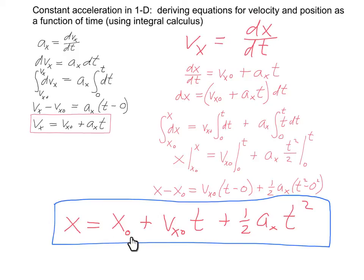The time derivative of x sub 0 is 0. The derivative with respect to time of v sub x0 times t is just this constant, v sub x0. We see that here. The derivative with respect to time of 1 half a sub x times t squared. Well, remember 1 half a sub x. That's a constant. The derivative of t squared with respect to time. The 2 comes down, cancels the 1 half. We're left with a sub x t. And we see that right there. So it all checks out.